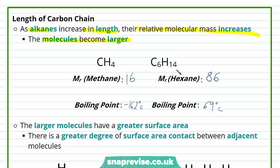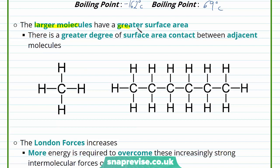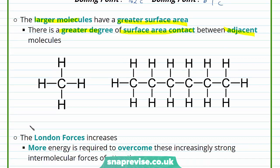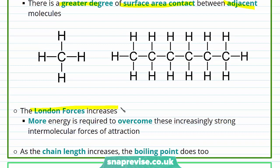But why is this? It's because the larger molecules have a greater surface area, so there's a greater degree of surface area contact between adjacent molecules. We can see how much larger the surface area of our hexane molecule will be. As a result of this, the London forces increase. More energy is required to overcome the increasingly strong intermolecular forces of attraction. And so therefore overall, as the chain length increases, the boiling point does too.